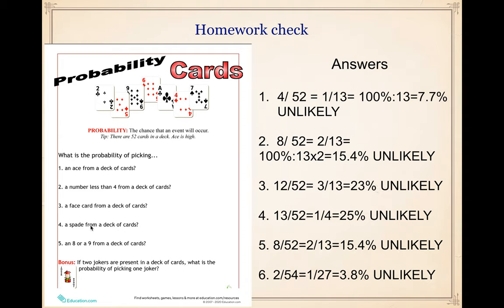The other one is a spade from a deck of cards. A spade is this one — the one I'm pointing at here. So we have thirteen over fifty-two, which is one over four, twenty-five percent chance, unlikely. Now the next one is an eight or a nine from a deck of cards. We add eights and nines and we have eight cards of those. So eight over fifty-two, or two over thirteen, which is fifteen point four percent, unlikely.